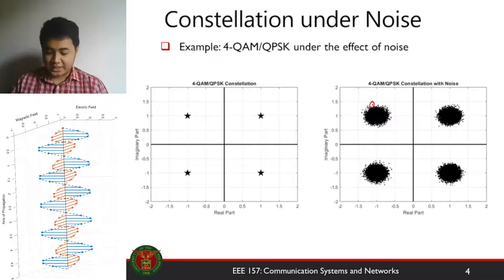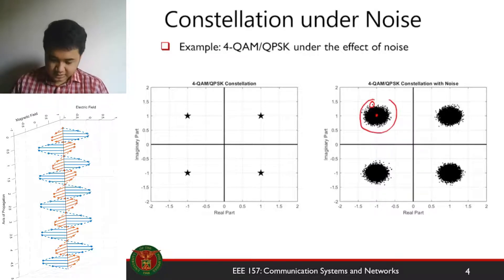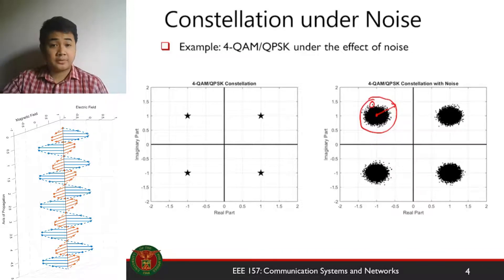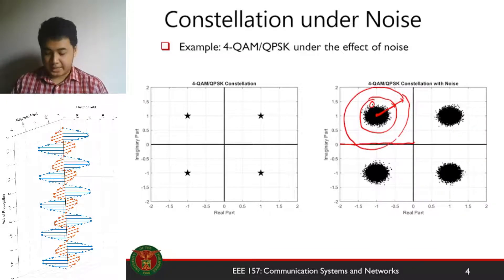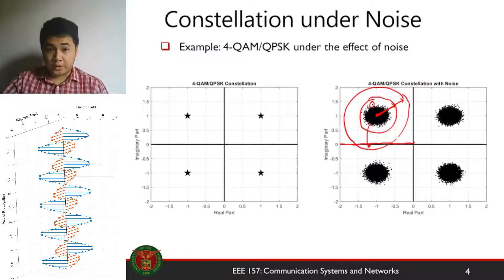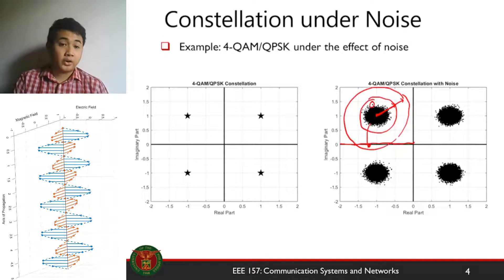What if we increase the noise? If we increase the noise, the radius of the spread — think of it as a circle — will actually increase. With larger noise, the radius of that circle grows, and at some point your circle will overlap with the decision region. When the symbol falls over the decision region boundary, the demodulator will have an error in demodulation. That's what we'll quantify in this lecture.